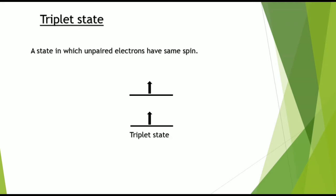Now let's see what is the triplet state. A state in which unpaired electrons have the same spin — that is, the unpaired electron in the ground state has the same spin as that of the unpaired electron in the excited state. Thus, this state is known as the triplet state.